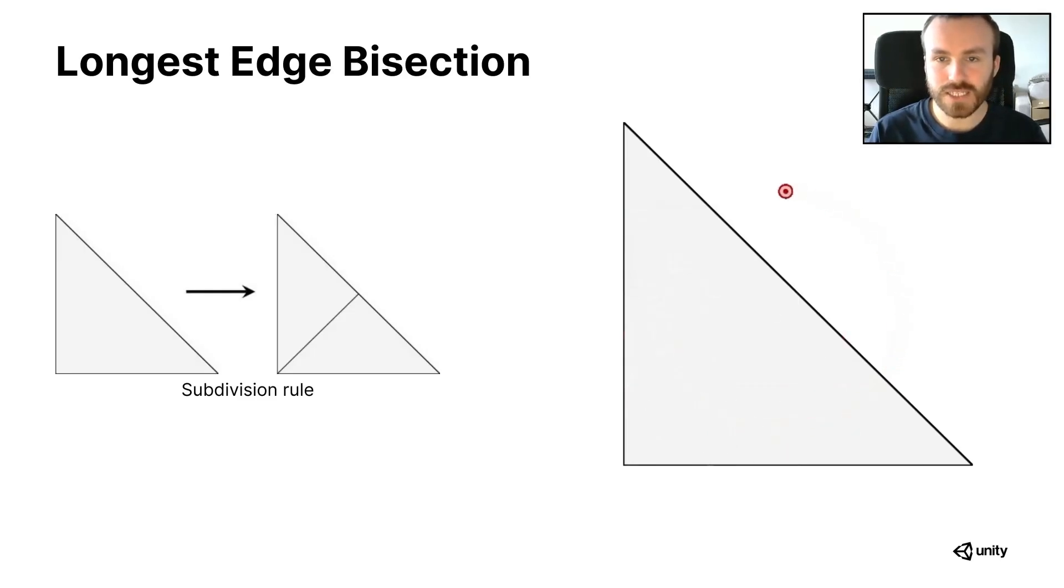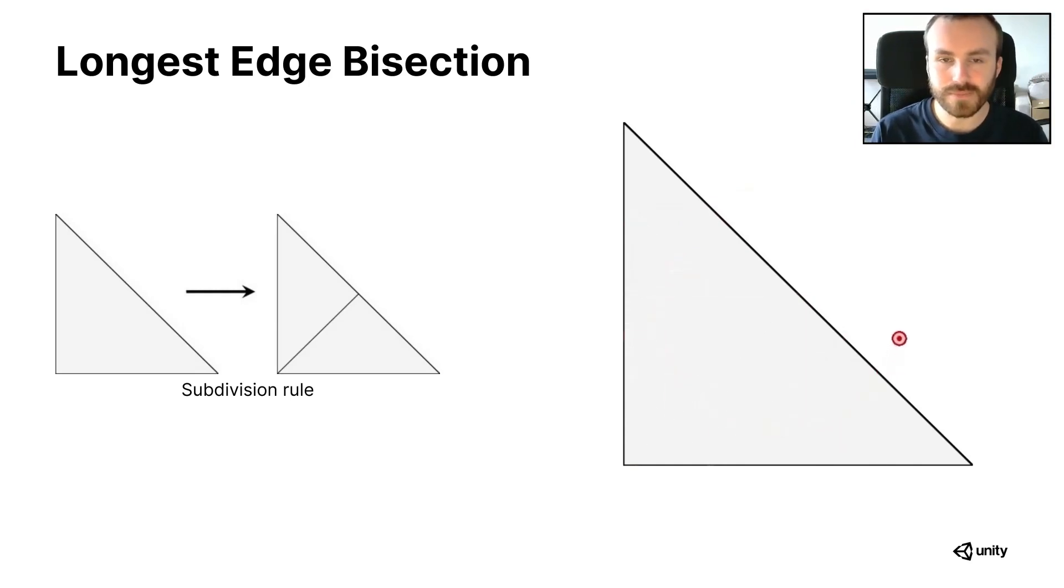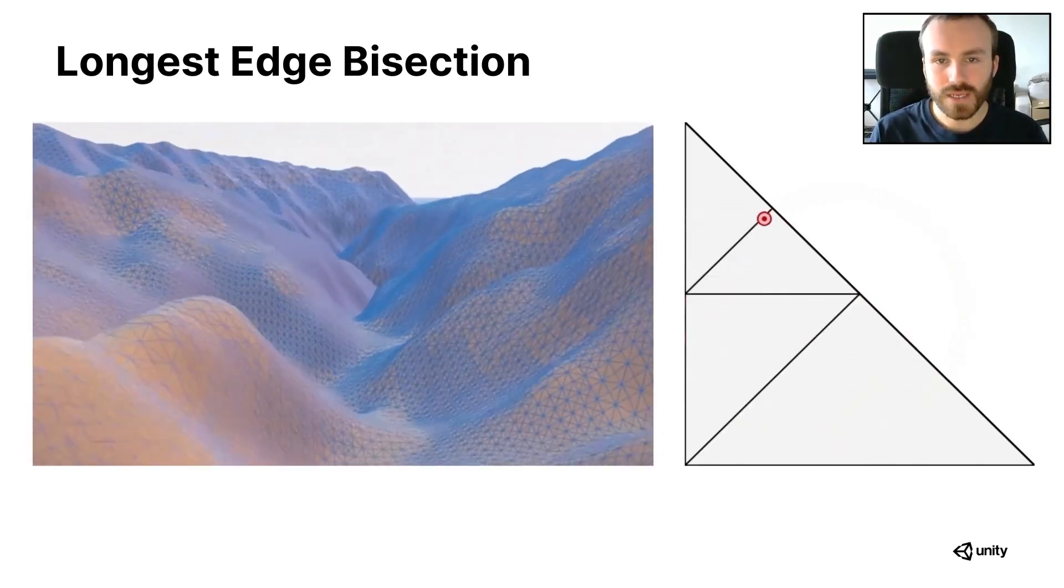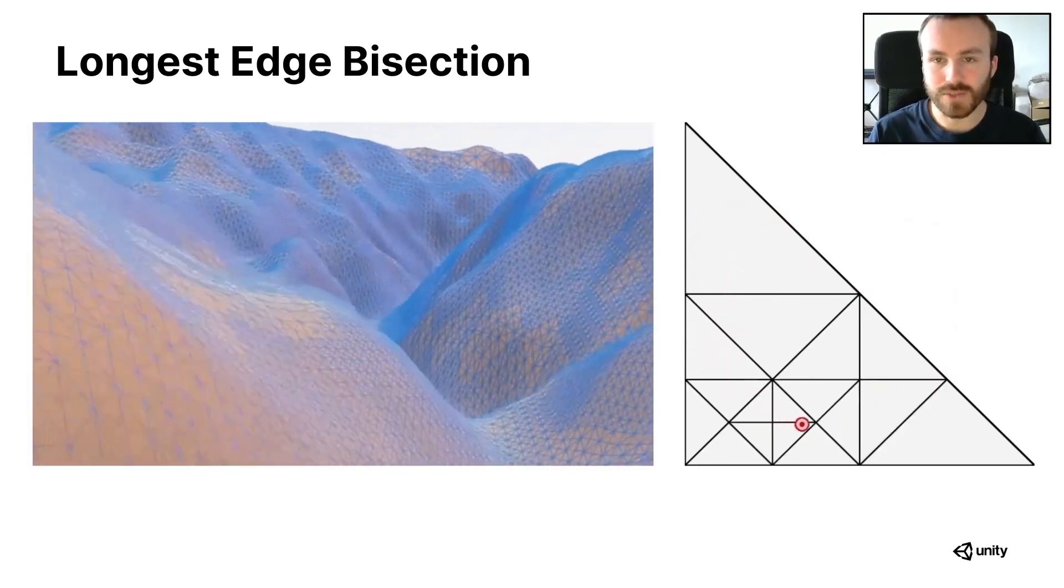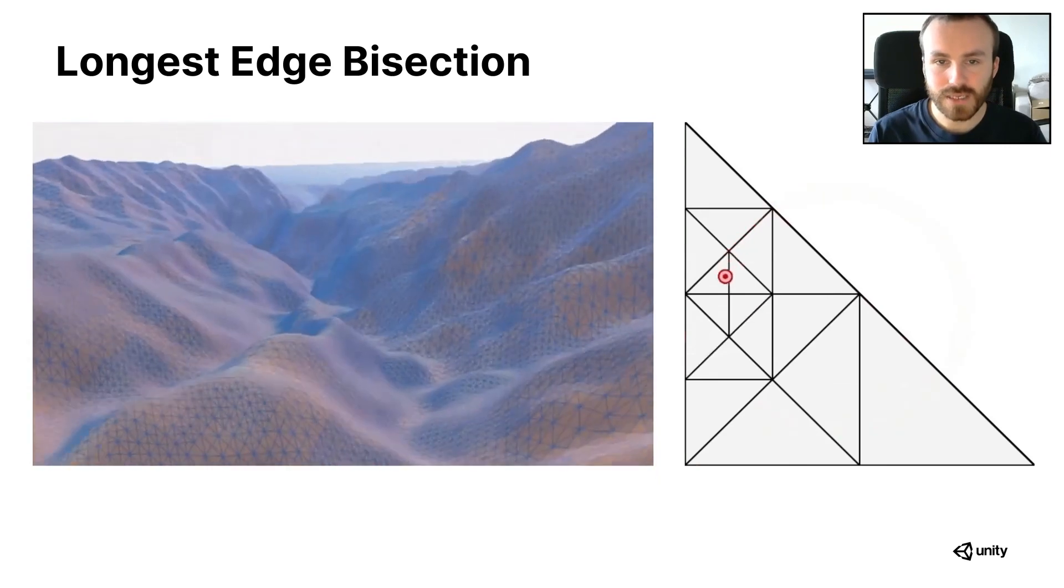Finally, if we apply this adaptive subdivision to a moving target, we get a level of detail system. And if we apply this subdivision algorithm to a triangular mesh with a height map, we get an adaptive terrain mesh.